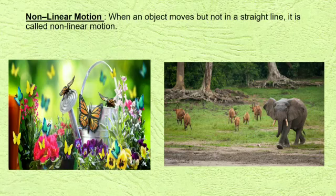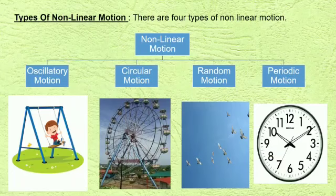Let's know about non-linear motion. You all might have seen the movement of a butterfly in a garden. They do not follow a straight path. So, we can say this is non-linear motion. When an object moves but not in a straight line, it is called non-linear motion. For example, motion of an animal roaming in the jungle. There are four types of non-linear motion: oscillatory motion, circular motion, random motion, and periodic motion.